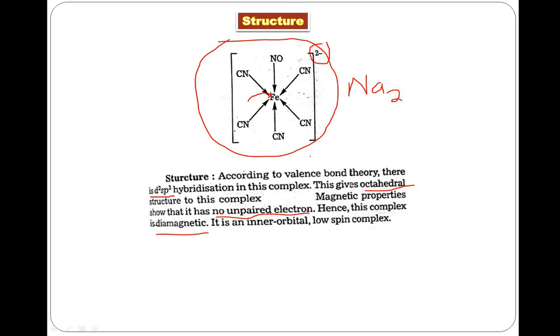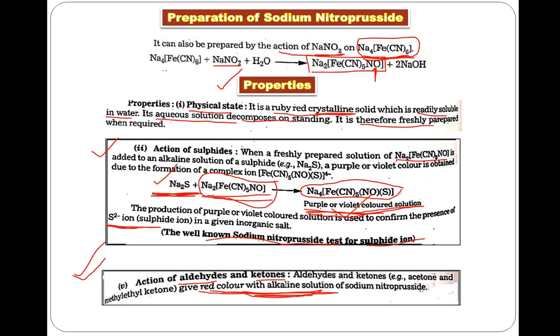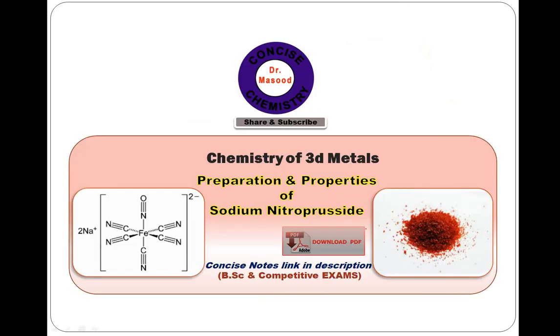When you check its d-orbitals, there are no unpaired electrons, which means it's diamagnetic. It is an inner orbital complex and a low spin complex, meaning it uses the inner 3d orbitals in its d2sp3 hybridization. So this is all about the preparation, properties, and structure of sodium nitroprusside.